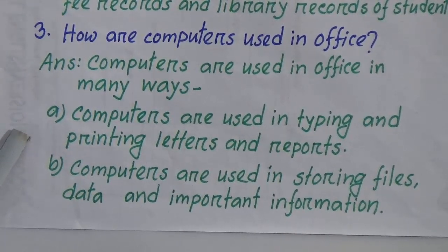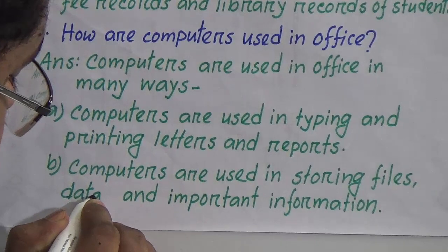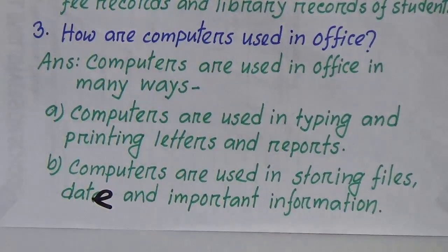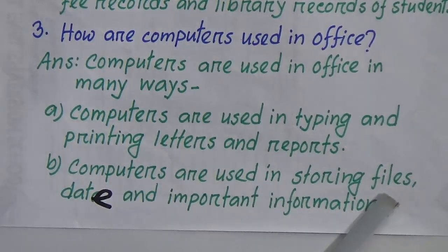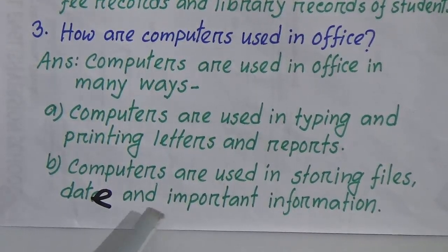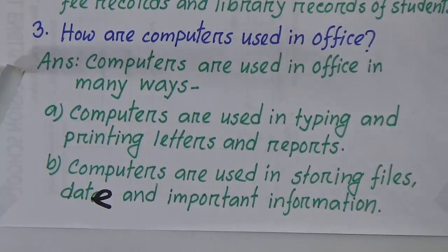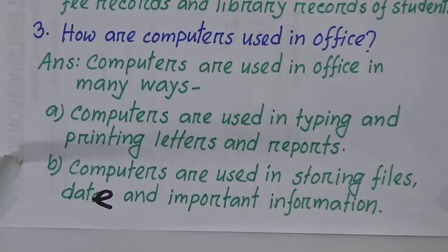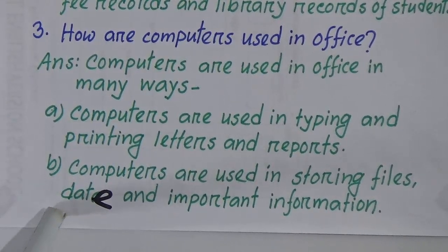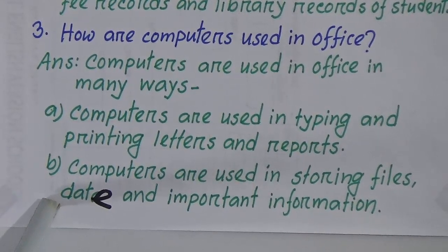There is a correction — computers are used in storing files, DATA (DAT) and important information. I am repeating again. Number 3: How are computers used in office? Answer: Computers are used in office in many ways. A) Computers are used in typing and printing letters and reports. B) Computers are used in storing files, data and important information.